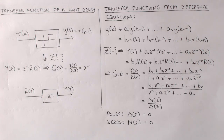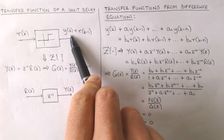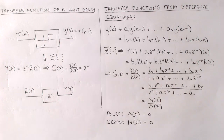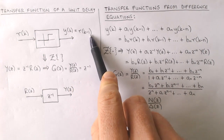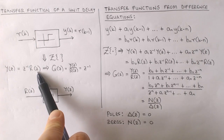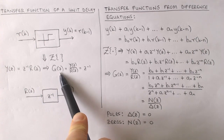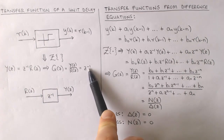When we drew block diagrams of digital systems we used the unit delay as the most basic dynamic component. The unit delay block produces an output equal to the input delayed by one time step. Taking the z-transform gives y(z) equals z to the minus one times r(z), and after dividing by r(z) we get the transfer function as z to the minus one, or one over z.